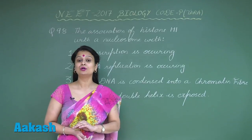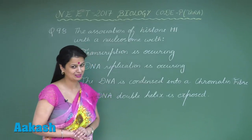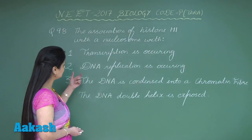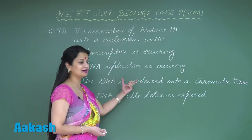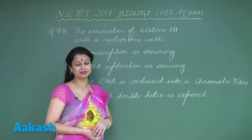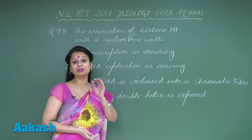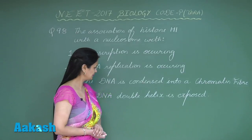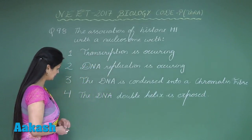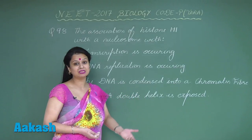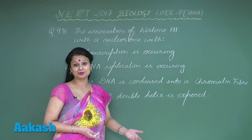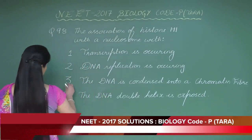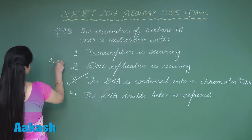So the histone proteins must be removed — no association there. For the third option, yes, the DNA is coiled and condensed into the chromatin fiber, and the protein involved in this coiling is the histone protein. For the last option, the DNA helix is exposed, meaning the histones are not associated. So the right answer is option number three.